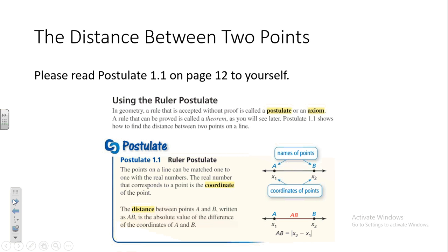That's our way in geometry of having very precise ways of saying things so that there's no ambiguity, and that anybody who reads it, if they can understand what we're talking about, cannot have a mistaken idea of what's going on. But this is really a lot of words to say simply: we can take a number line and put two points on it, give them coordinates, and ask you to find the length of the segment between those two points.